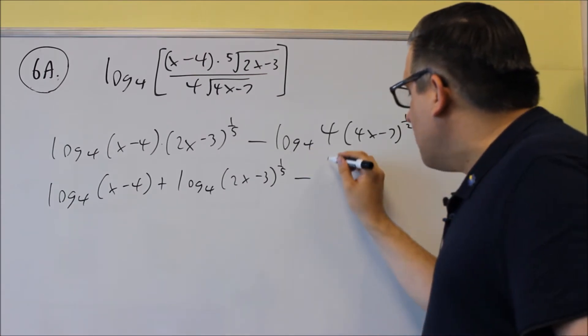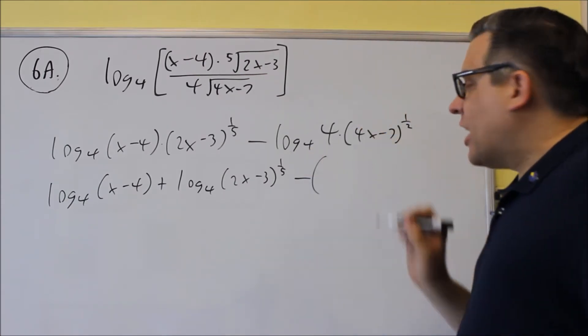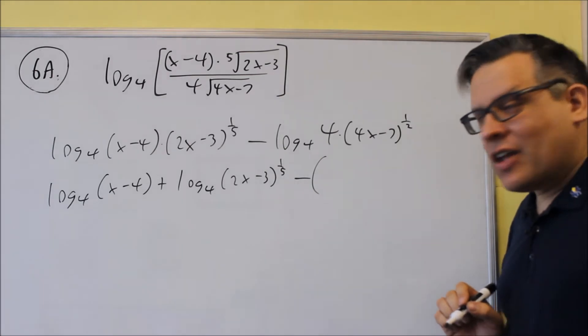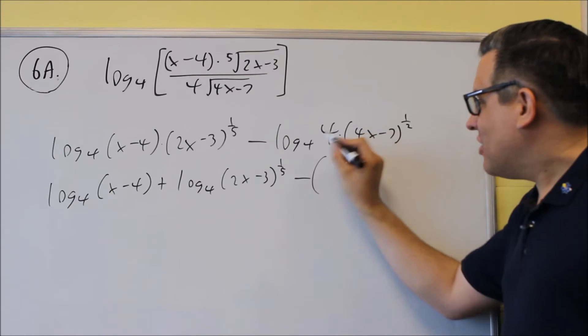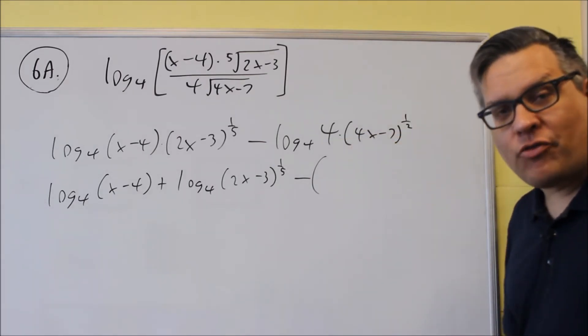Now I got a minus sign but notice I still actually have two things multiplied together here. Even though it's a numerical one, you want to break that up as well. So any separate part, you want to break that up fully.